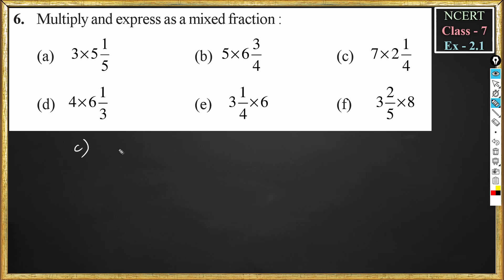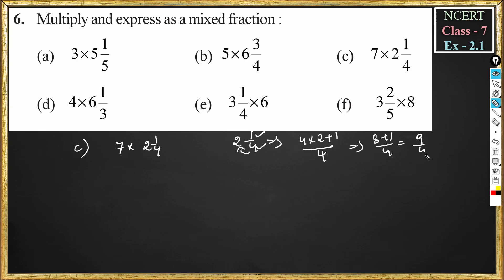Problem c: 7 into 2¹/₄. We convert 2¹/₄ into an improper fraction: multiply 4 by 2 and add the numerator 1, then put 4 in the denominator again. This becomes 8 + 1 by 4, which equals 9/4. Alternatively, writing 2 + 1/4 with LCM 4 gives (2 × 4 + 1) / 4, which also equals 9/4.